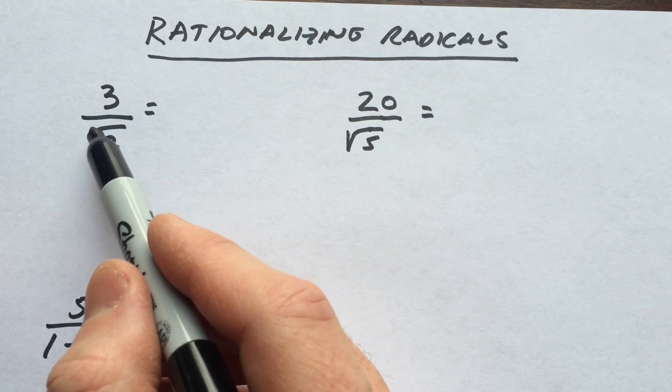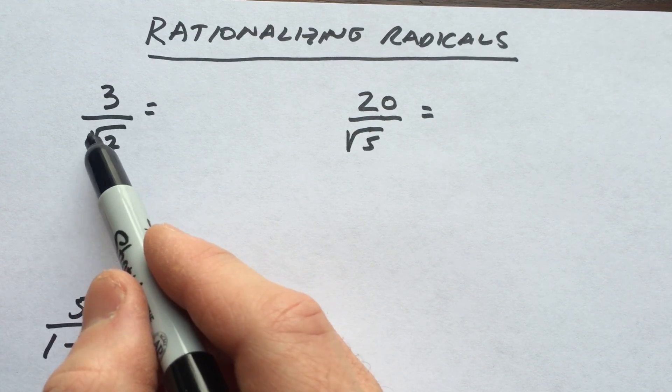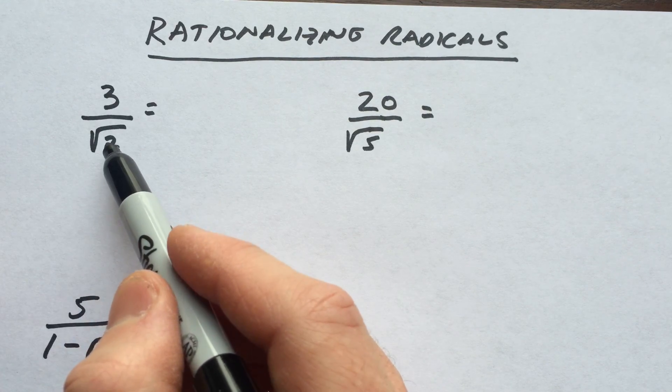We don't want the radical or square root in the denominator. We want to get rid of that. We want this to just be an integer.